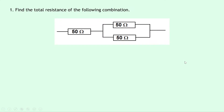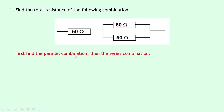Question one says to find the total resistance of the following combination, and this is actually the first one from the theory video on combination circuits. So we have a 50 ohm resistor in series with two 50 ohm resistors in parallel. What we need to realize here is that in order to get the total resistance, we can't add this one to this one until we know what the parallel combination is. So we need to first find the parallel combination and then the series combination.